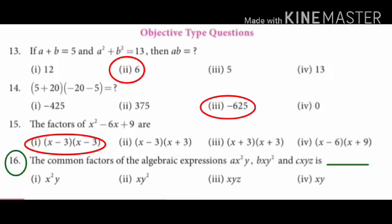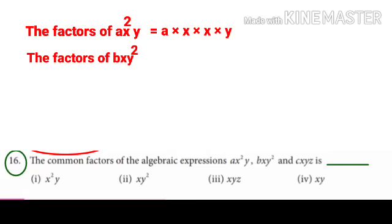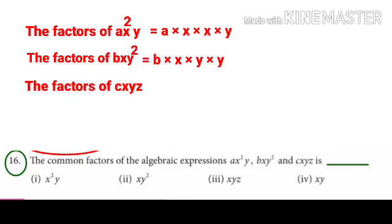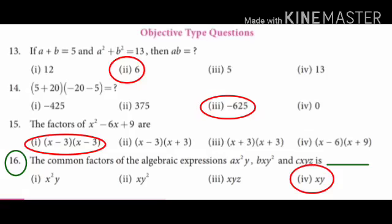16th sum: The common factors of the algebraic expressions ax squared y, bxy squared, and cxyz. The factors of ax squared y are a, x, x, y. The factors of bxy squared are b, x, y, y. The factors of cxyz are c, x, y, z. The common factor across all three expressions is xy. So the answer is option 4: xy.